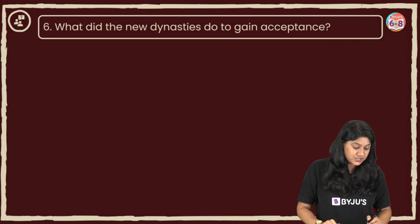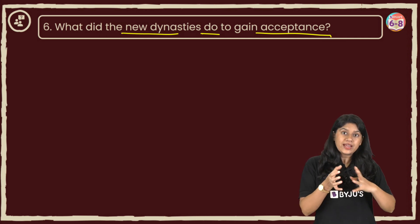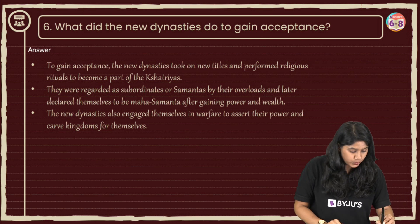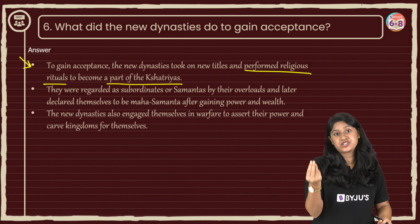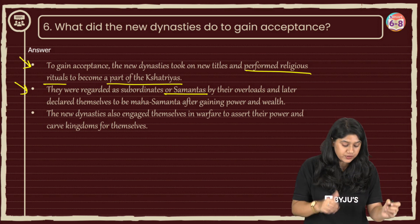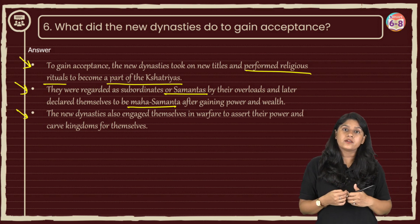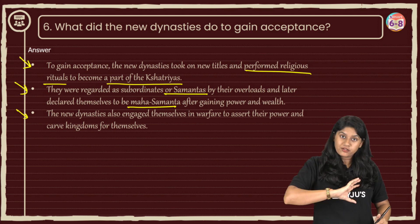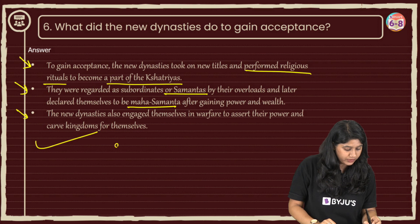The next question: what did the new dynasties do to gain acceptance? They were not from a king's family but had gained power — so what did they do for people to accept them? To gain acceptance, they performed various religious rituals to become part of the Kshatriya varna — the Hiranyagarbha ceremony is a key example. Initially they were regarded as Samanthas, then they overthrew and became Mahasamanthas, and later became kings. As their wealth grew, they captured more territory and performed spiritual rituals so that the people could accept them as king.